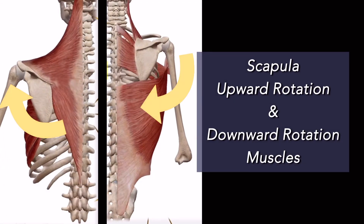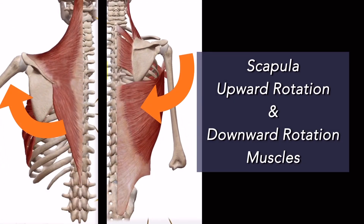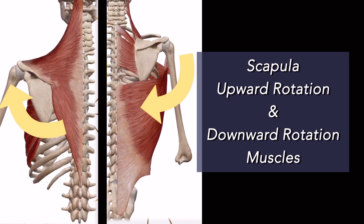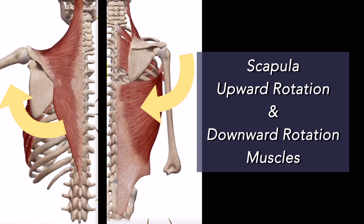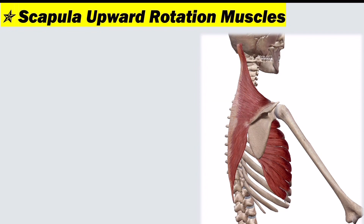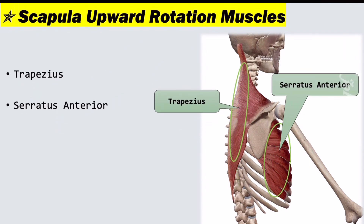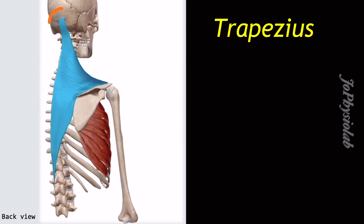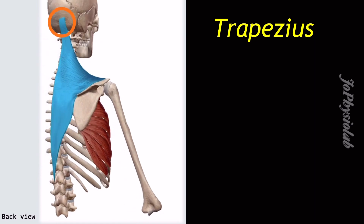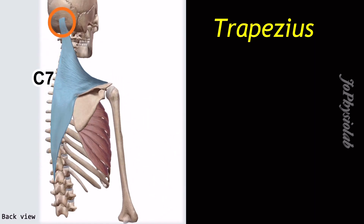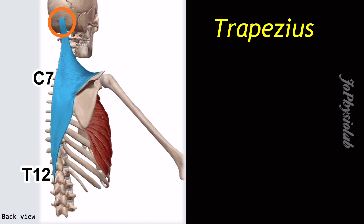The scapula has upward rotation and downward rotation muscles. There are two main muscles for scapula upward rotation: the trapezius and serratus anterior. The trapezius muscle attachment begins with the occipital bone and ligamentum nuchae to C7, and T12 spinous processes of the vertebrae.